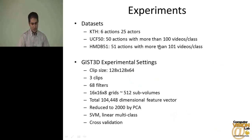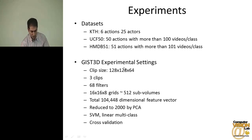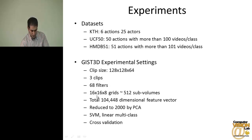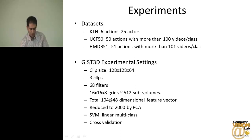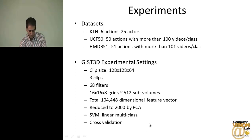We performed experiments on three datasets. UCF50 and HMDB51 are the two challenging datasets with a large number of classes. Our clip size was 128×128 by 64 frames, and we extracted three clips using 68 filters. Our grid size was 16×16×8, resulting in 512 subvolumes and around 100,000-dimensional feature vectors. We applied PCA and trained support vector machines with cross validation.